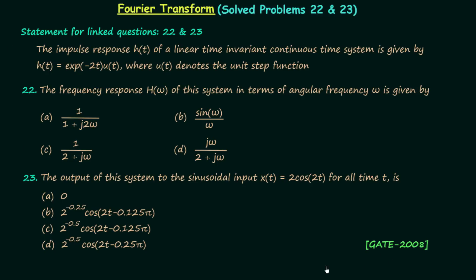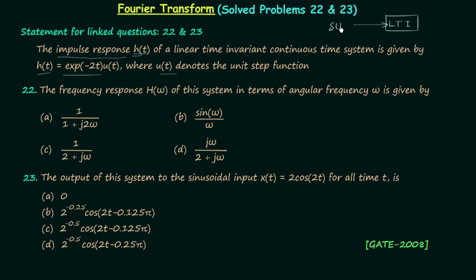In the GATE 2008 exam there were two questions based on this statement. According to the statement, the impulse response h(t) of a linear time-invariant continuous time system is given by h(t) = e^(-2t) u(t), where u(t) denotes the unit step function. This means when the input is a unit impulse, the output h(t) is equal to e^(-2t) u(t).